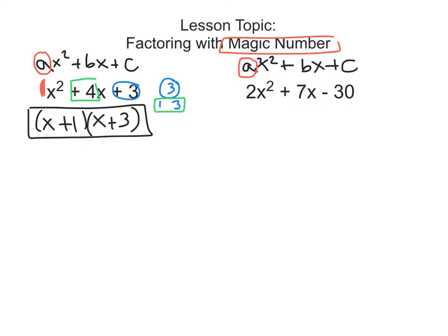Now when a is not 1, we are going to use a process called magic number. Some people call this the AC method because we are going to be starting the problem by looking at A and C. So A is right here and C is this right here. So if I look at my A value, which is 2, and I look at my C value, which is negative 30...